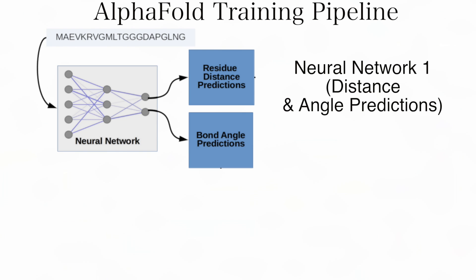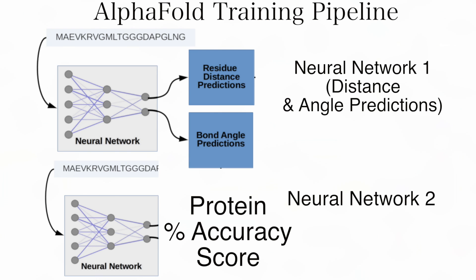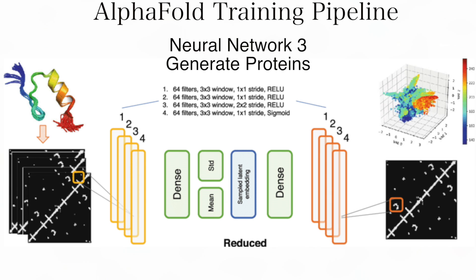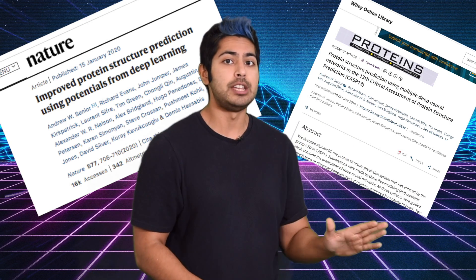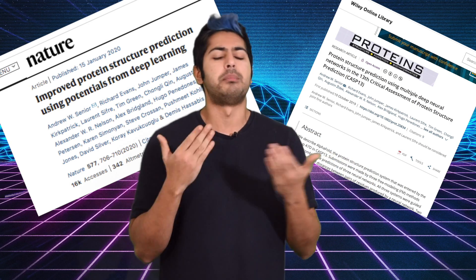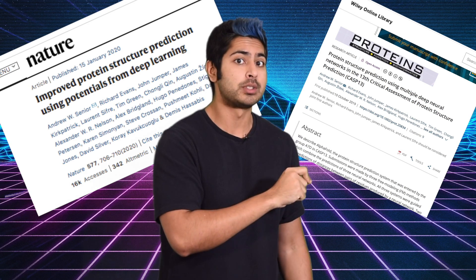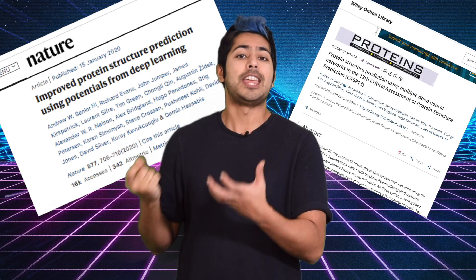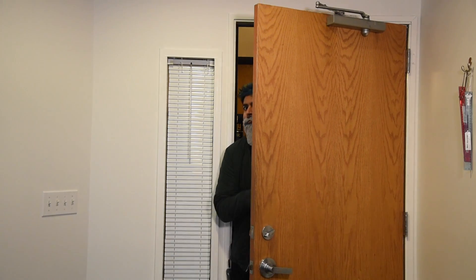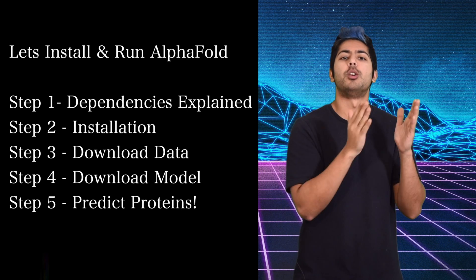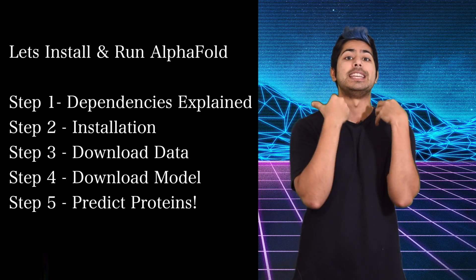AlphaFold used three neural networks during training. The first, a convolutional network, predicted distance pairs and angles. The second convolutional network estimated the accuracy of a given protein structure. And the third, a variational autoencoder, generated a protein structure. To be totally frank, it's unclear if that's exactly how it worked — that's just my best estimate after analyzing their documentation. They submitted papers to Nature and to Proteins, but both had some contradictory information, and the neural architecture described in those papers was clearly different from the programmatic architecture released on GitHub. It's okay though, because at least the code works.